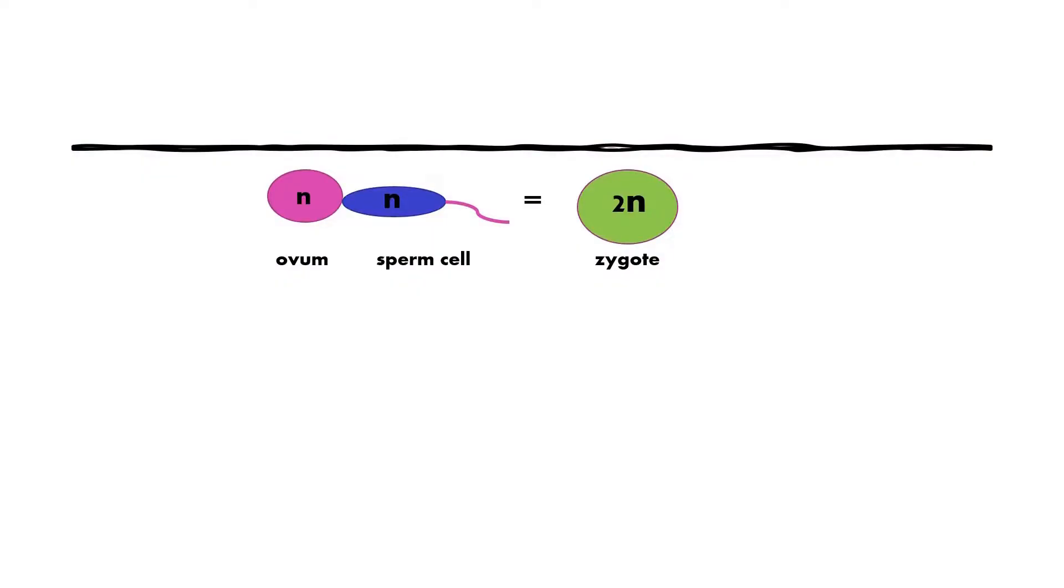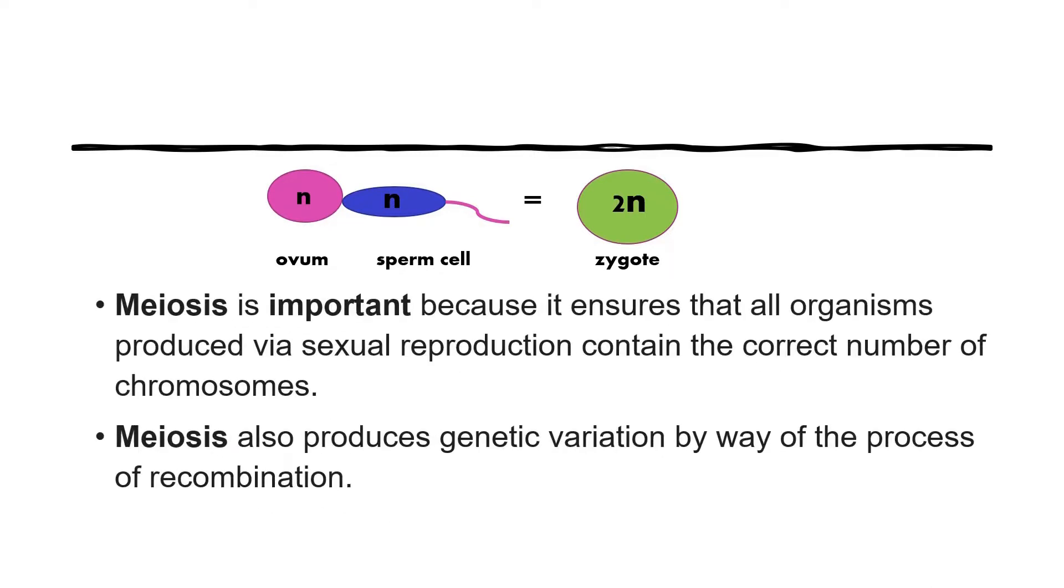Meiosis is important in sexual reproduction. If an ovum with a haploid chromosome is fertilized by a sperm cell with a haploid chromosome, it results in a zygote which is diploid. Meiosis is important because it ensures that all organisms produced via sexual reproduction contain the correct number of chromosomes. It is also important in the production of genetic variation by way of the process of recombination.